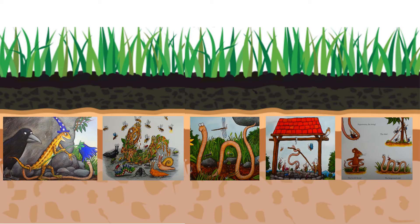The next picture looks like Superworm is being used as a fishing line. When does he need to be used as a fishing line? Is that before he gets captured by the lizard, or is it after? You'll have to decide so you can put the story into the right order.